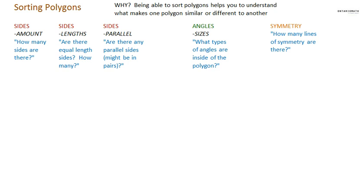So, here's five criteria or questions that I use. So, sides. The amount of sides. So, how many sides are there? Lengths. The sides. Are there equal length sides? And if so, how many?